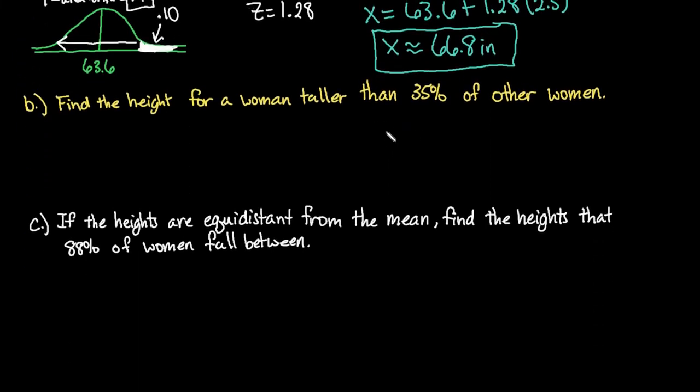Looking at the next one, we're still going to use the same mean and standard deviation but what's going to change is our z-score. So we have to find our z-score for this one and so what we're doing this time is we're looking for the height for a woman taller than 35 percent of other women. So that means our area to the left is going to be 0.35.